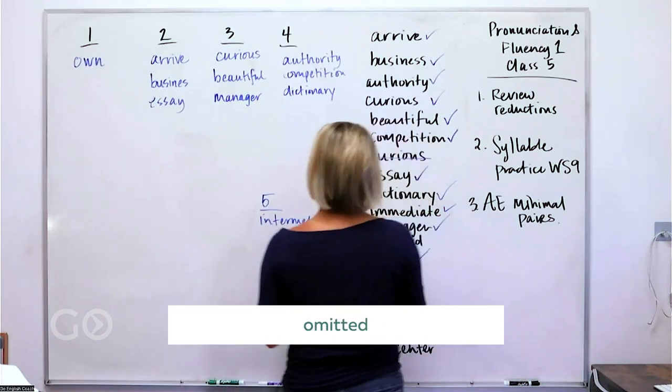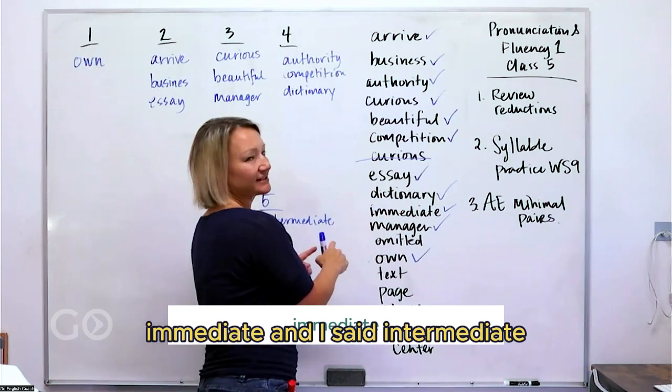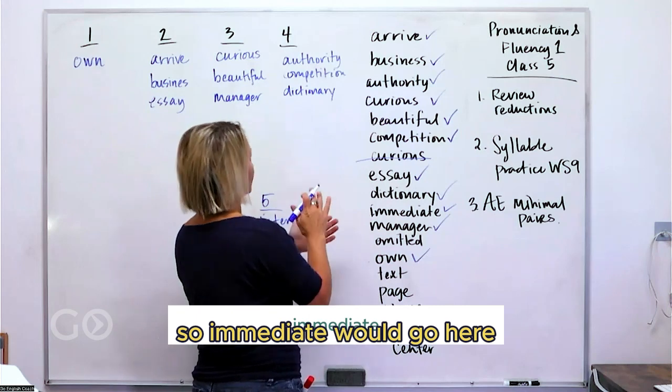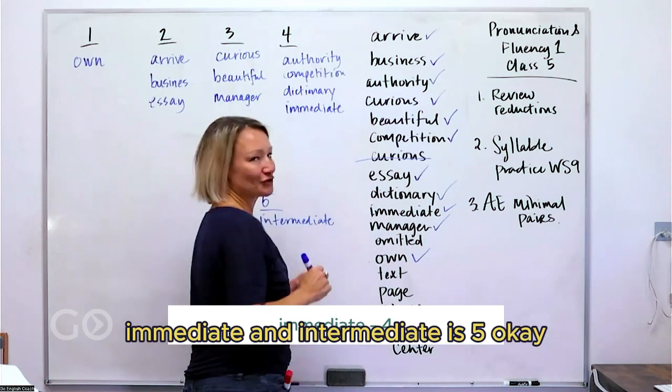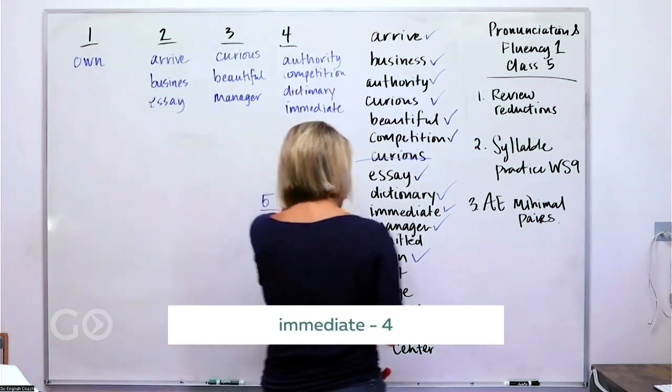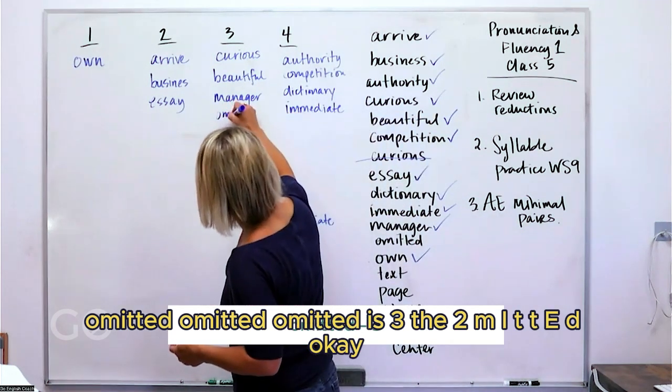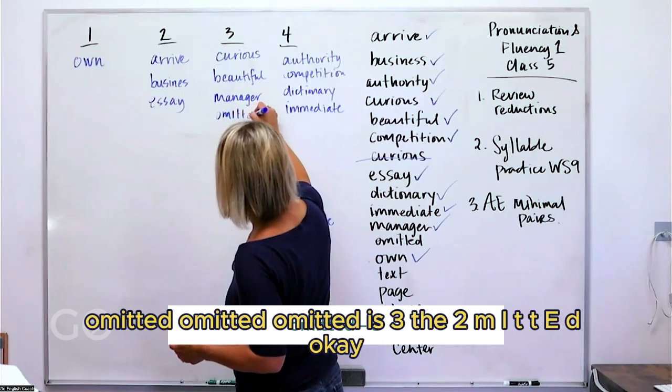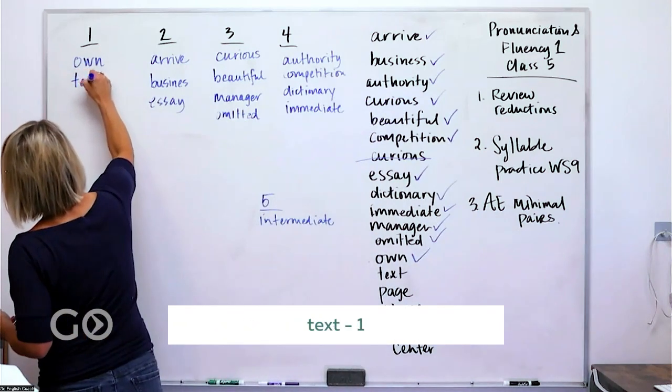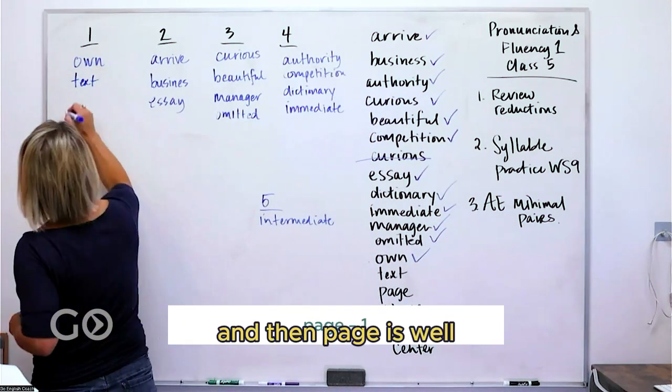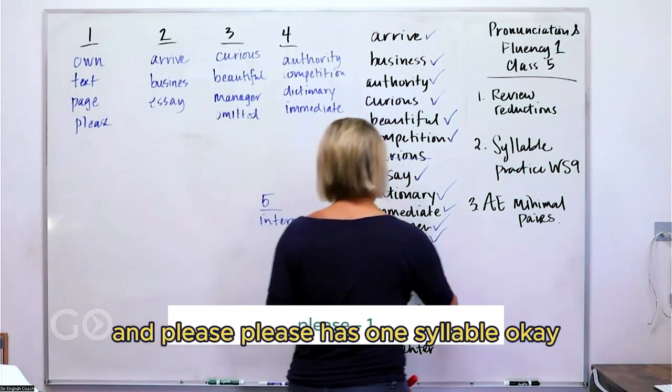Omitted. If you can see which word, I have the word here, immediate, and I said intermediate. So I said two different words. So immediate would go here. Immediate. And intermediate is five. Omitted. Omitted is three. Text. That has only one. And then page as well. And please. Please has one syllable.